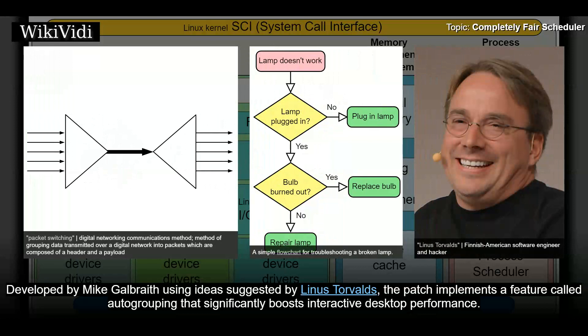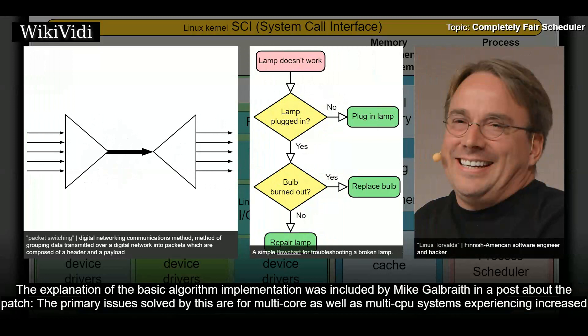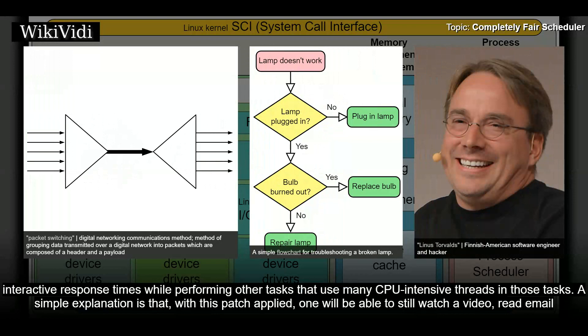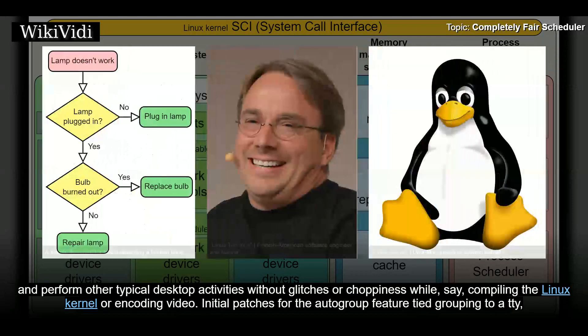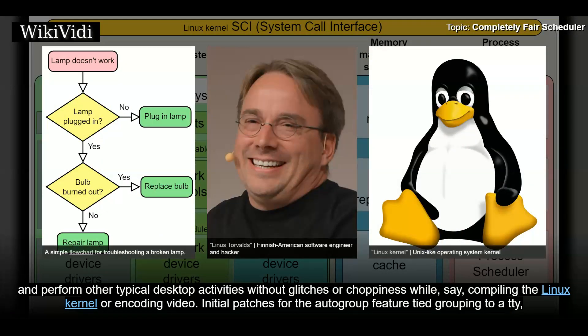Developed by Mike Galbraith using ideas suggested by Linus Torvalds, the patch implements a feature called auto-grouping that significantly boosts interactive desktop performance. The explanation of the basic algorithm implementation was included by Mike Galbraith in a post about the patch. The primary issues solved are for multi-core as well as multi-CPU systems experiencing increased interactive response times while performing tasks that use many CPU-intensive threads. With this patch applied, one will be able to still watch a video, read email, and perform other typical desktop activities without glitches or choppiness while, say, compiling the Linux kernel or encoding video.